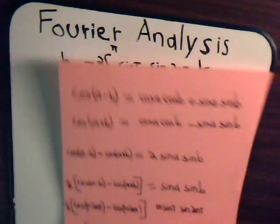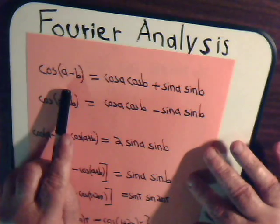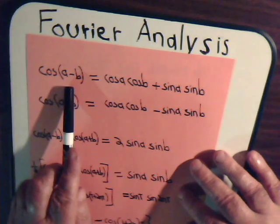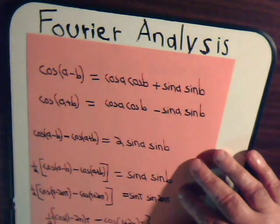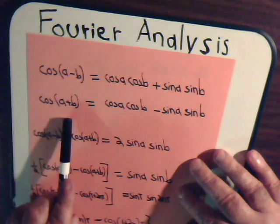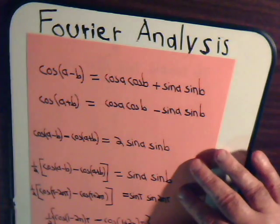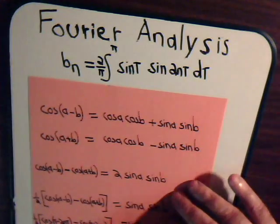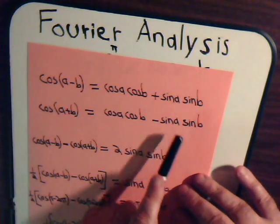And indeed is the case here. Remember that the cosine of a minus b is cosine a cosine b plus sine a sine b. And the cosine of a plus b, that's the same thing except with the minus sign here. Now here we have two sine functions multiplied together.